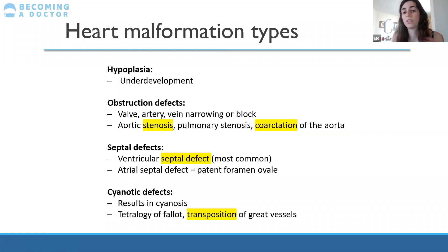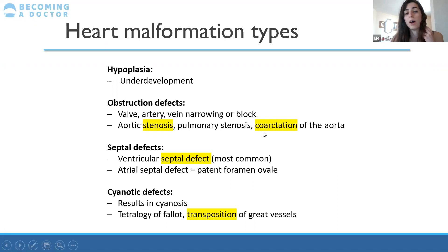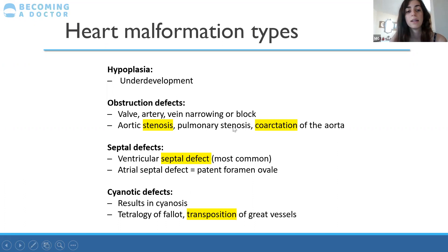There are many different heart malformations because the heart has such a complex development. Hypoplasia is underdevelopment. Obstruction defects occur when valves form poorly and obstruct flow — aortic stenosis and pulmonary stenosis are due to valves, while coarctation of the aorta is a narrowing of the aorta itself, preventing blood from getting to the body at high pressure.